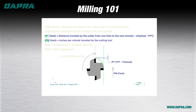However, our program doesn't use IPT — it uses IPM, or inches per minute. This is also referred to as the program feed rate and is the number of inches your cutting tool will travel in one minute. This value is calculated based on the RPM, IPT, and the number of teeth your cutting tool has. Again, we'll cover the calculations in a separate video.